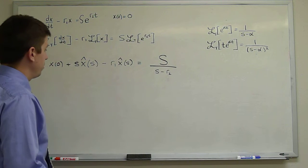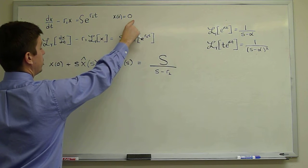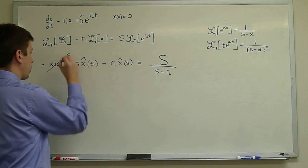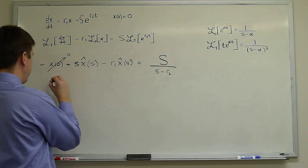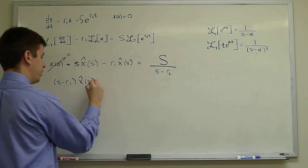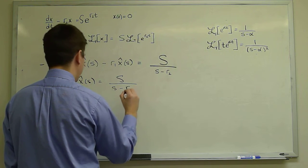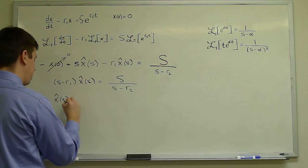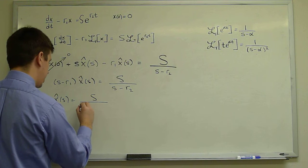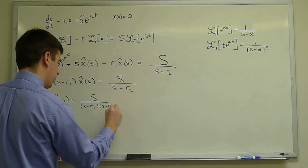Now we solve for the unknown x̂(S). The initial condition x(0) equals 0 means that the x(0) term goes away. Collecting like terms, we have (S minus R1)·x̂(S) equals capital S times S over (S minus R2), or x̂(S) equals capital S over (S minus R1)(S minus R2).